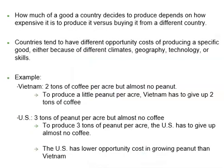While every society must choose how much of each good or service it should produce, it does not need to produce every single good it consumes. How much of a good a country decides to produce often depends on how expensive it is to produce versus buying it from another country. A country's PPF shows the trade-off between devoting resources to produce one good versus another. Countries tend to have different opportunity costs of producing a specific good because of differences in climate, geography, technology, or skills.